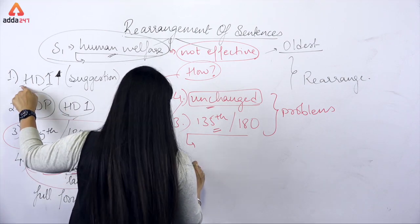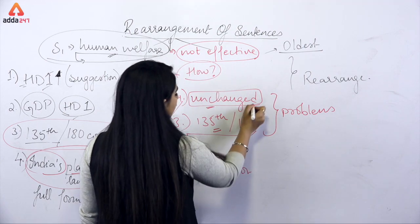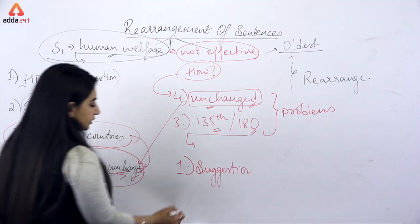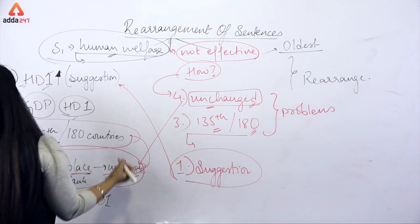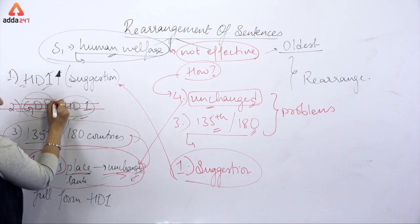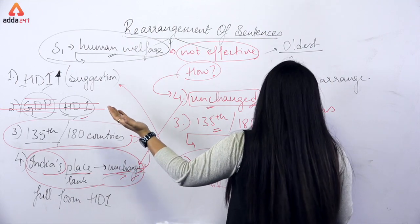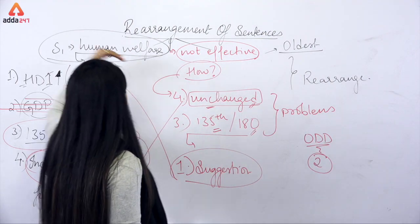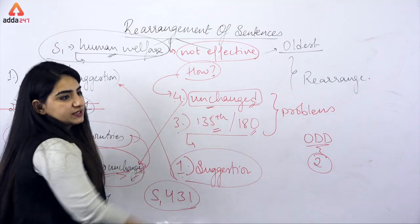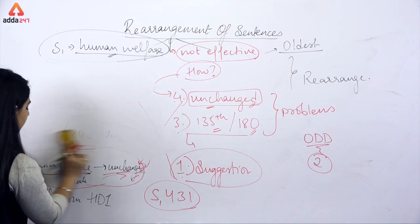After discussing the problem in sentences four and three, we obviously need a suggestion. The suggestion is in option one — we need to change our government. And option two, which talks about GDP comparison, does not fit with the HDI discussion. So the odd sentence is option two, and the sequence is: Statement 1 → 4 → 3 → 1, with option two as the odd sentence.